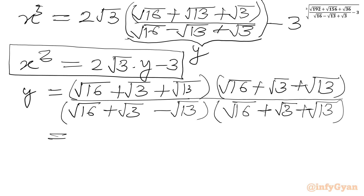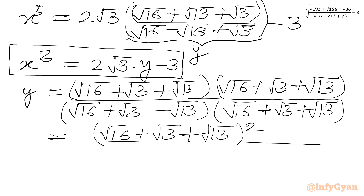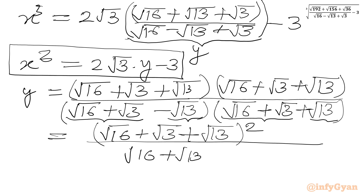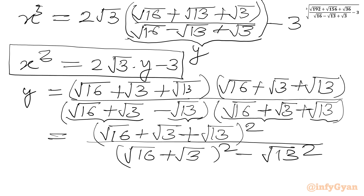The numerator is now the perfect square (root 16 plus root 3 plus root 13) whole squared. The denominator has a specific form — if we call (root 16 plus root 3) as a and root 13 as b, then (a minus b)(a plus b) gives us the difference of two squares formula. So the denominator becomes (root 16 plus root 3) whole squared minus (root 13) whole squared. Now the (a+b+c)² formula applies to the numerator, and the (a+b)² formula applies in the denominator.